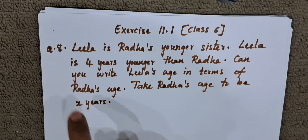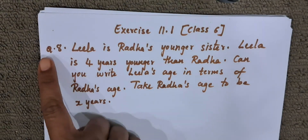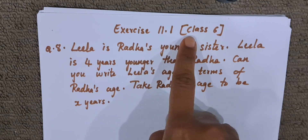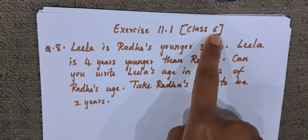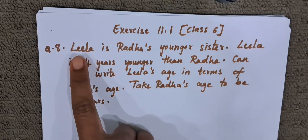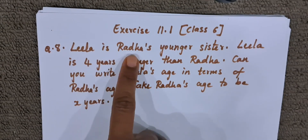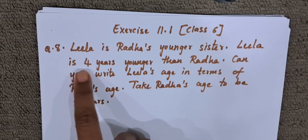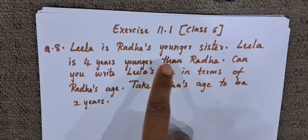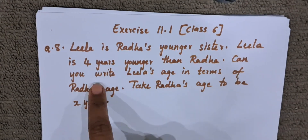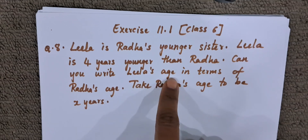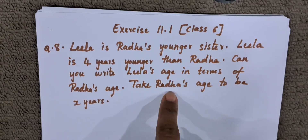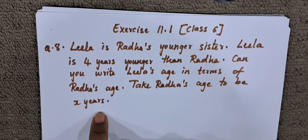Hello everyone. Today we are going to do question number 8 of exercise 11.1, class 6. The question goes like this: Leela is Radha's younger sister. Leela is 4 years younger than Radha. Can you write Leela's age in terms of Radha's age? Take Radha's age to be X years.